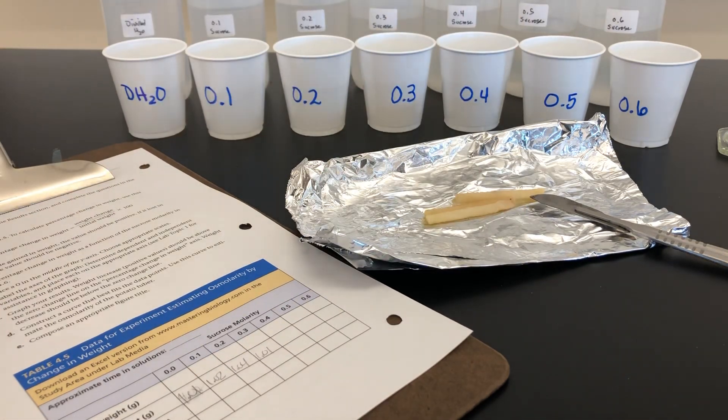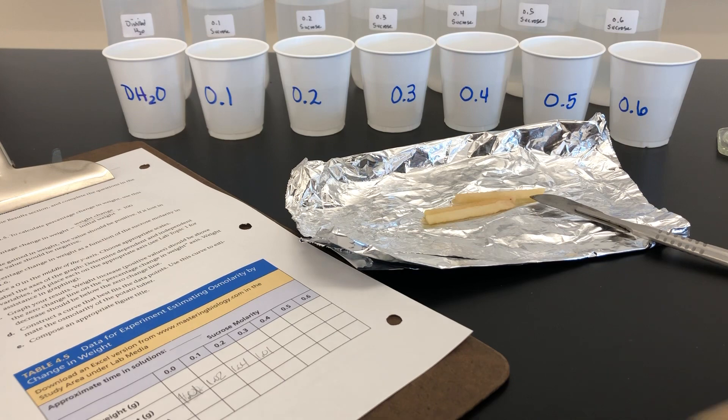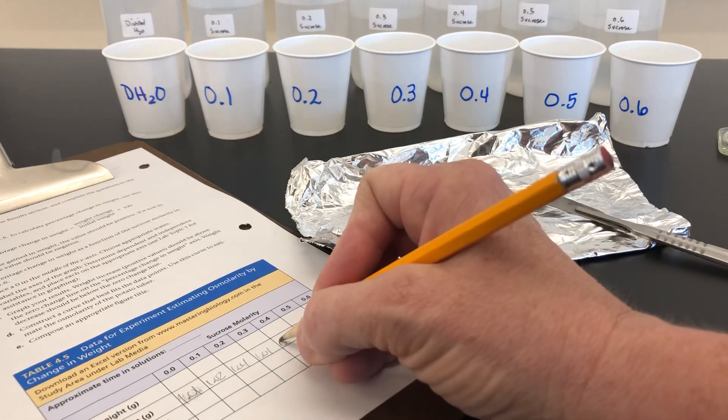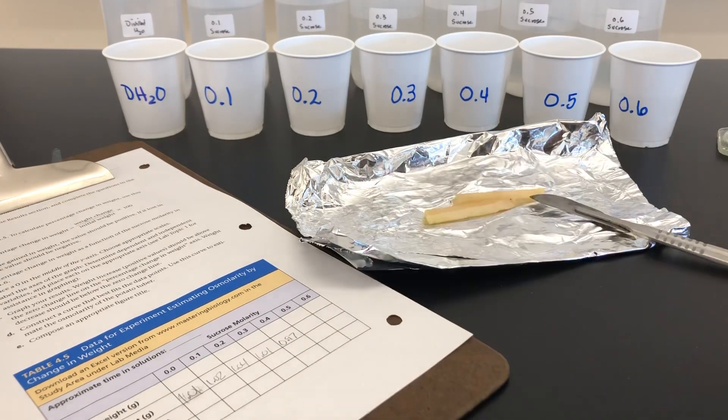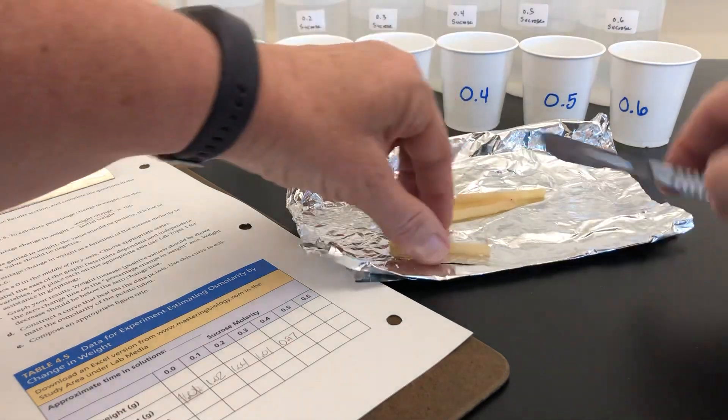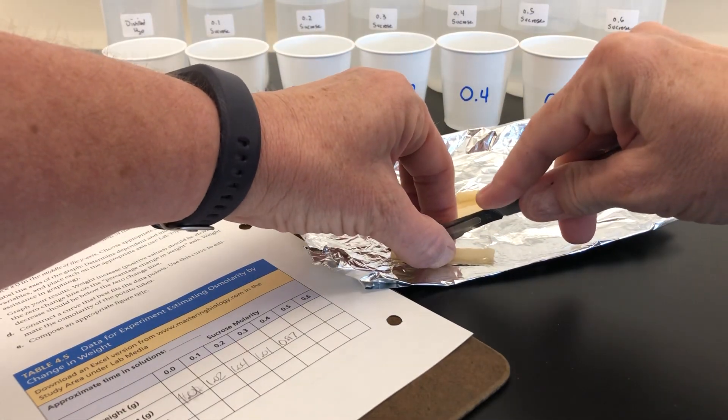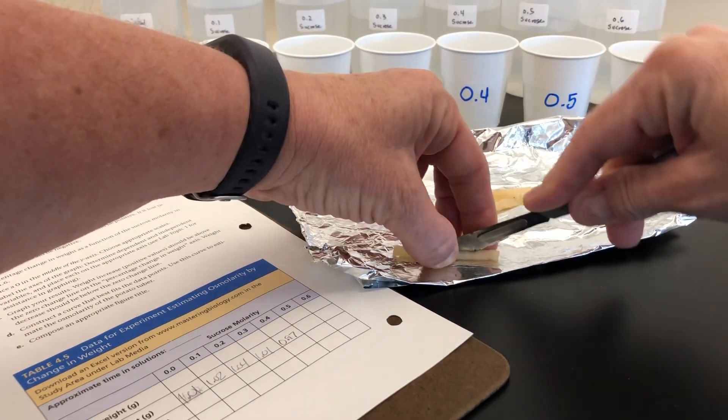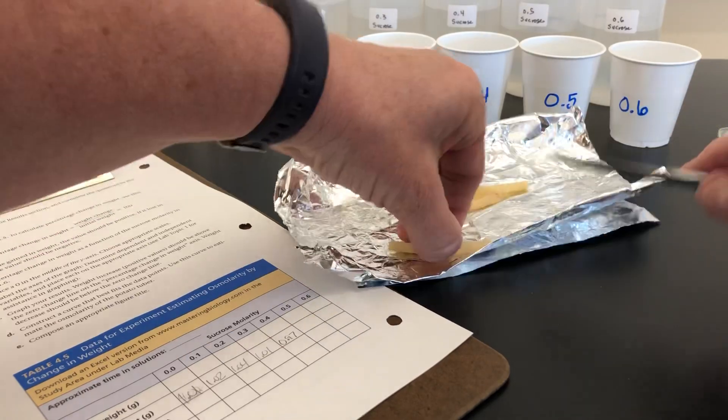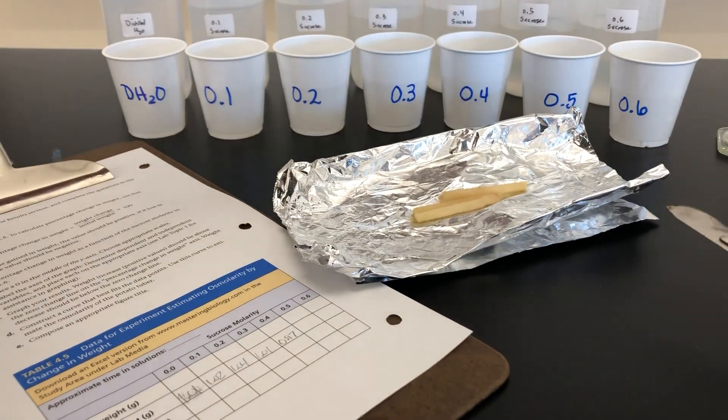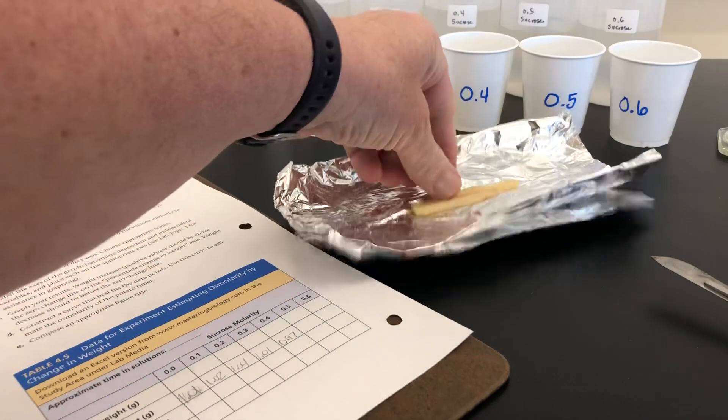The 0.4 tube will weigh 0.97. We'll place it in the last two.